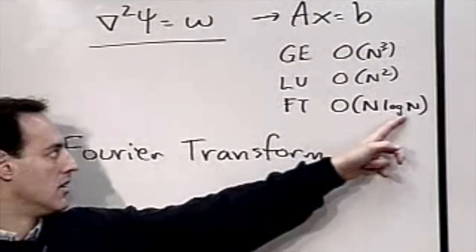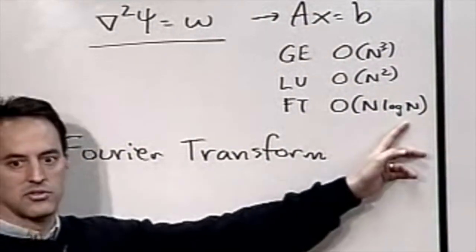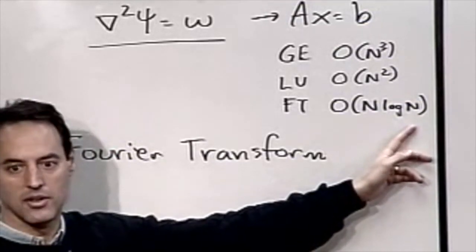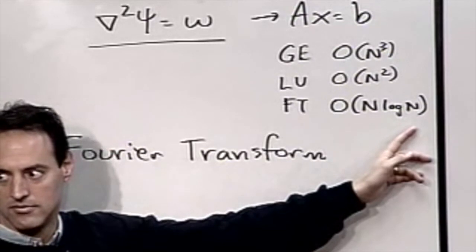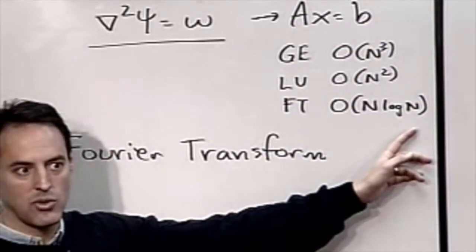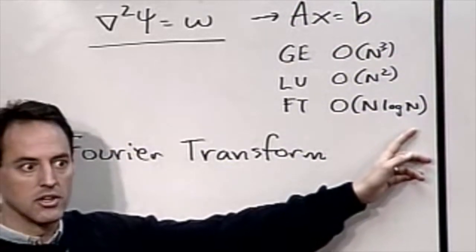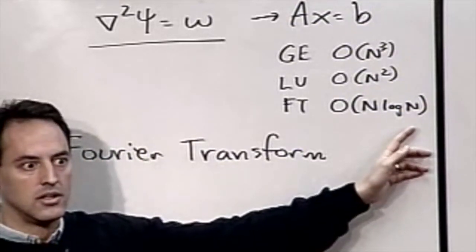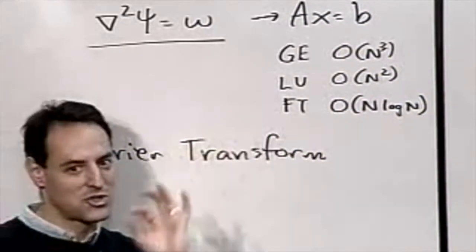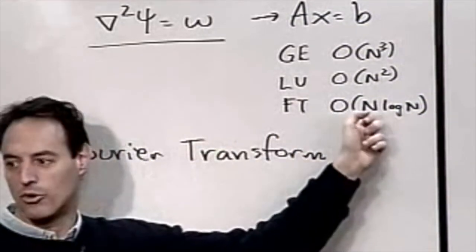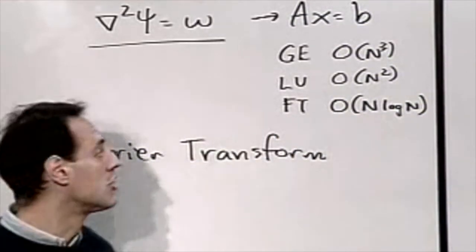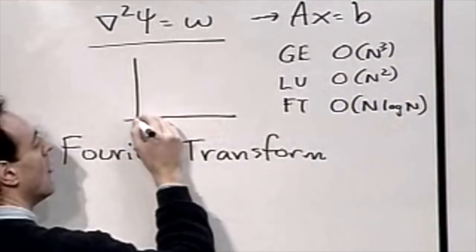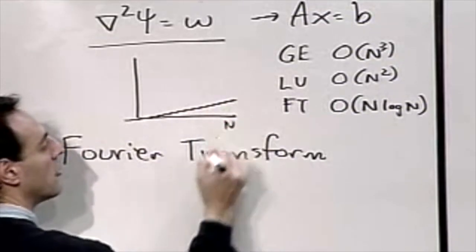If you've ever plotted n log n, log n is almost constant. Take n to be a thousand — log n gives you a value of about 8, which is not very big. So n log n almost grows linearly with the size of n.